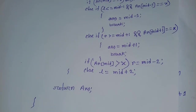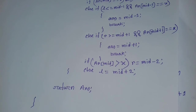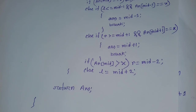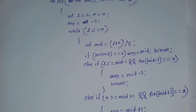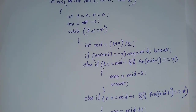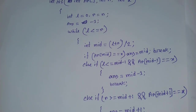If arr[mid] is less than x, we set l equal to mid plus 2. Finally, we return the answer. This is the complete nearly sorted binary search algorithm. That's all for this algorithm — let's practice it.